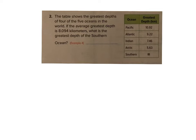Now we have a word problem and it's going to be a little different — we're going to incorporate algebra in this one. The table shows the greatest depths of four of the five oceans. The average depth is 8.094. What is the greatest depth of the Southern Ocean? We don't know what this is, so this is going to be a variable — I'm going to make it an s.